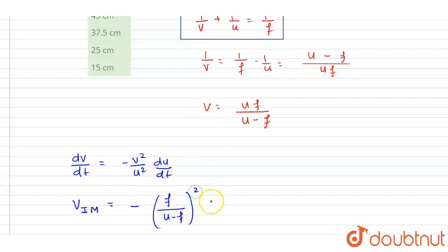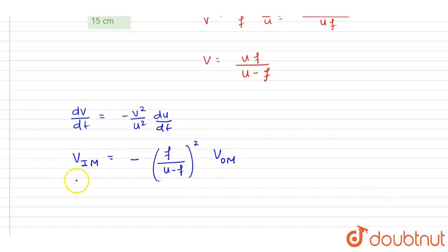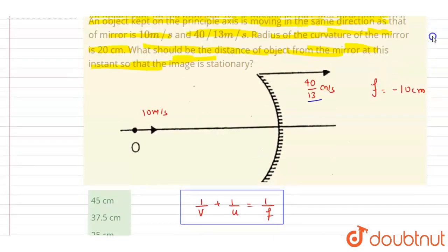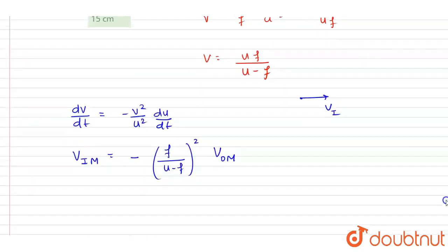Let's say the image also has velocity vi in the same direction as the object and the mirror. We want the image velocity to be zero — stationary — so vi = 0.